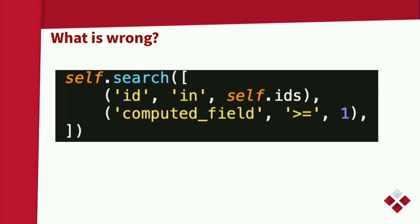Looking at this example, what is wrong here? There's no limit. And there's an extra column. We are using a filter with a computed field, and this field is not stored in the database. Then you need to compute this field for all records, and this is a performance overkill. It was a weird case, but it was a real case.